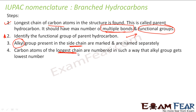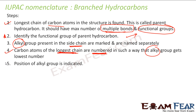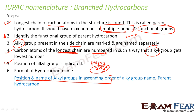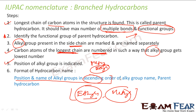Then you name the longest chain and number it in such a way that the alkyl group gets the lowest number. Once you have the lowest number, the position of the alkyl group is indicated — for example, maybe 2, 3, or 5, depending on the case. The format is: position and name of the alkyl group in ascending order, then the parent hydrocarbon. For example, if I have both methyl and ethyl groups, E comes before M alphabetically, so ethyl will come first, then methyl.